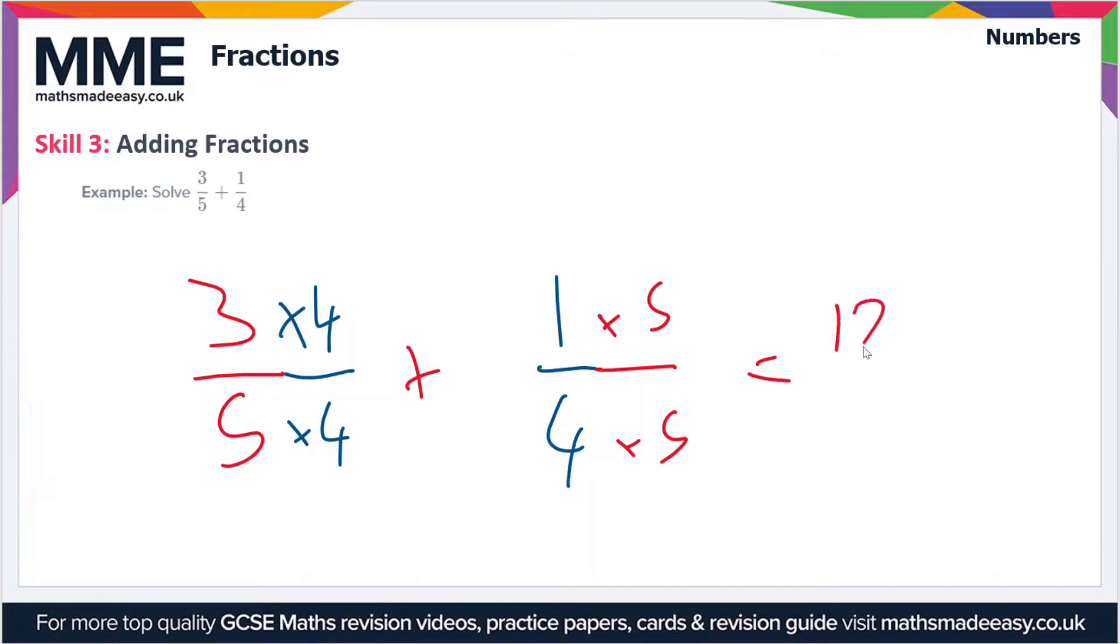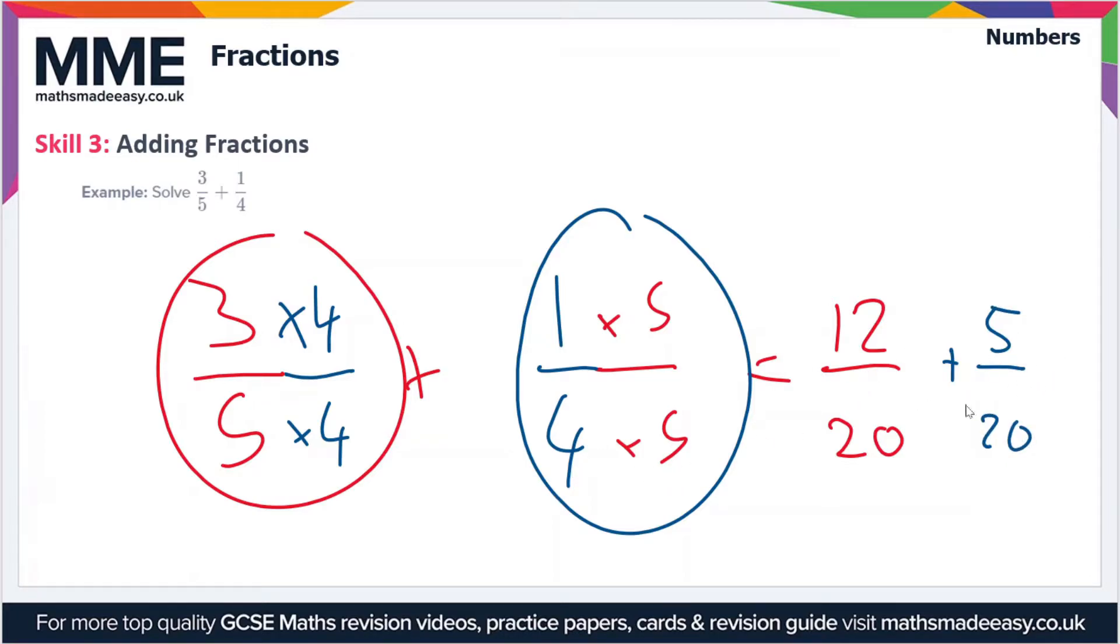We've got three times four which is 12, and five times four is 20, so we've got 12 over 20 plus five over 20. So that's equal to 17 over 20. So that's our final answer.